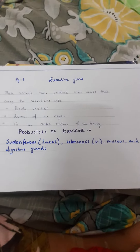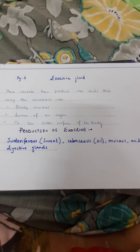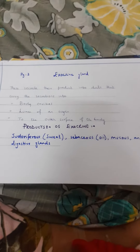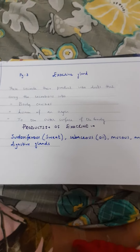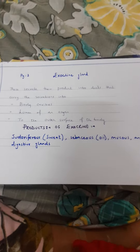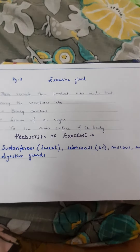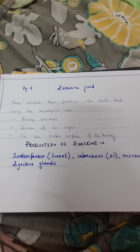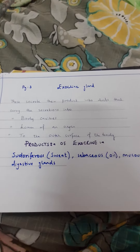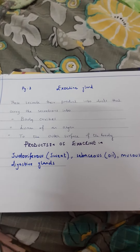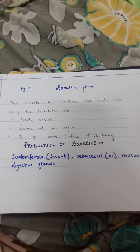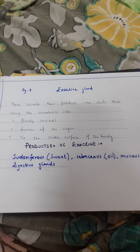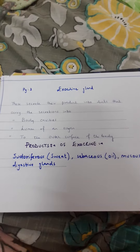We were discussing the endocrine and exocrine glands. A gland is a cell or a tissue — it can be one cell. The exocrine gland is a gland which pours its secretions or products into a duct, body cavity, or the outer surface of the body.